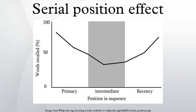Since the short-term store (STS) has limited capacity, the distractor displaces later study list items from the STS so that at test, these items can only be retrieved from the long-term store (LTS), and have lost their earlier advantage. Dual-store models successfully account for both the recency effect in immediate recall tasks and the attenuation of such an effect in delayed free recall. However, a major problem is that this model cannot predict the long-term recency effect observed in delayed recall when a distractor intervenes between each study item during the interstimulus interval.